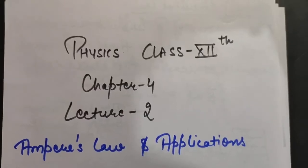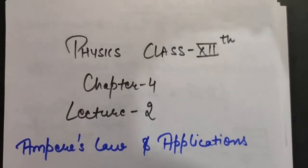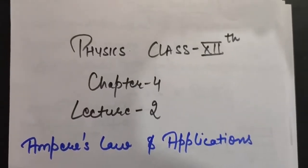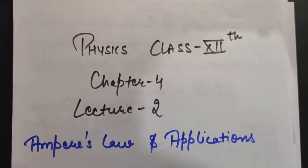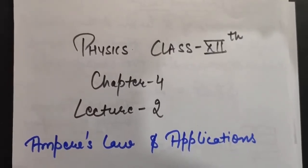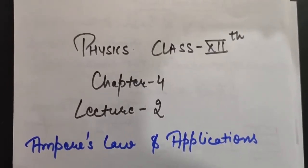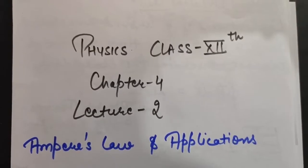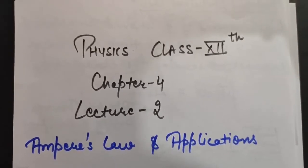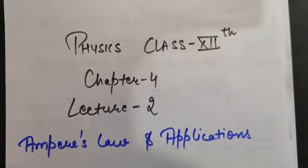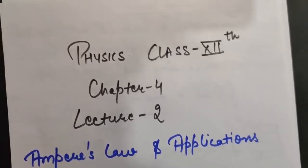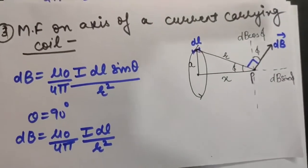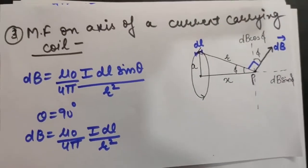Good morning students. This is physics chapter number 4, lecture number 2. In this lecture we will be studying about Ampere's Circuital Law and its applications. Before starting that, one application of Biot-Savart's law was left, so we will be doing that first. That is the magnetic field on the axis of a current-carrying coil.